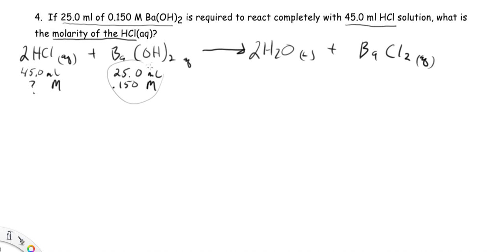We're going to start off with our base in this case, just like we did in our titration. The only difference is our molar ratio. So we'll start off with 25.0 milliliters of the solution, and that's barium hydroxide.